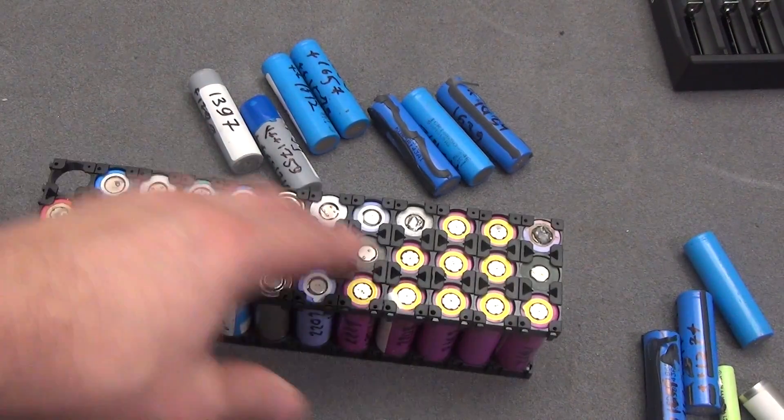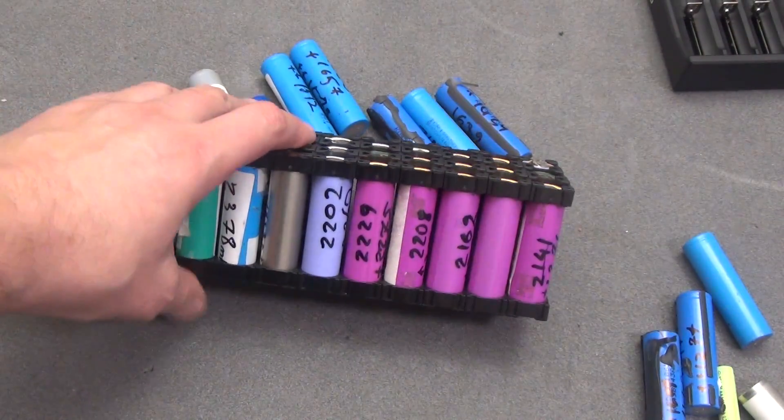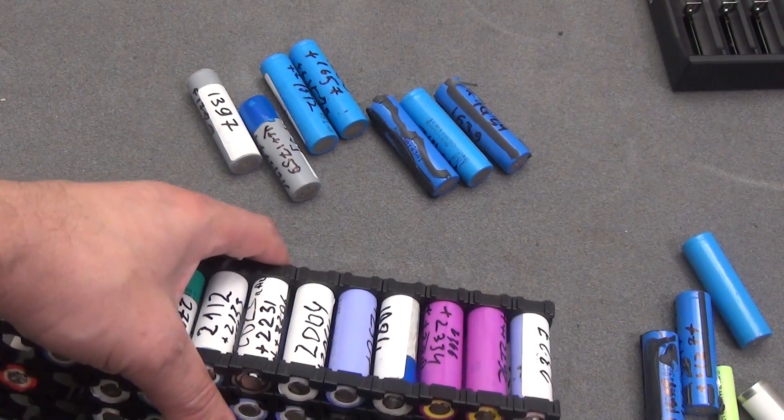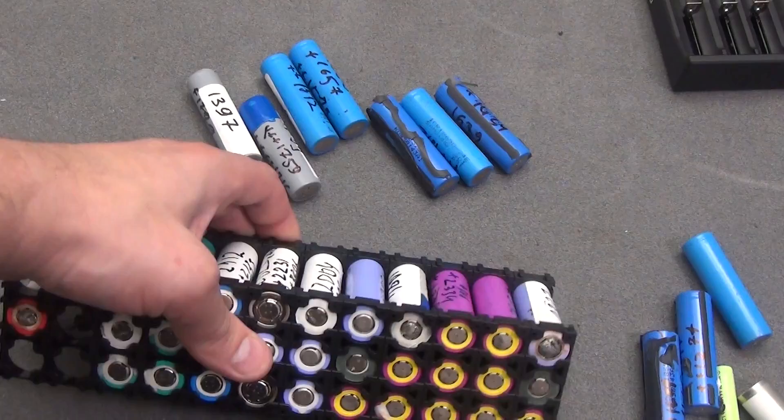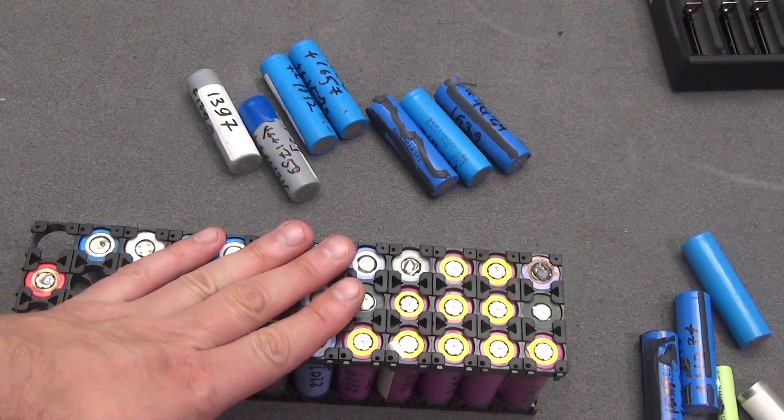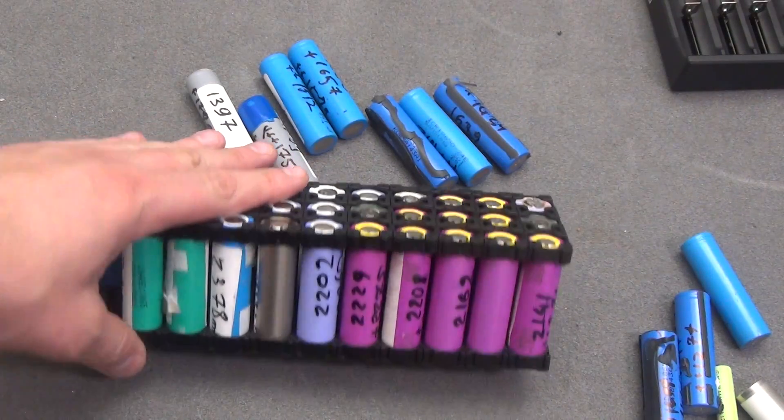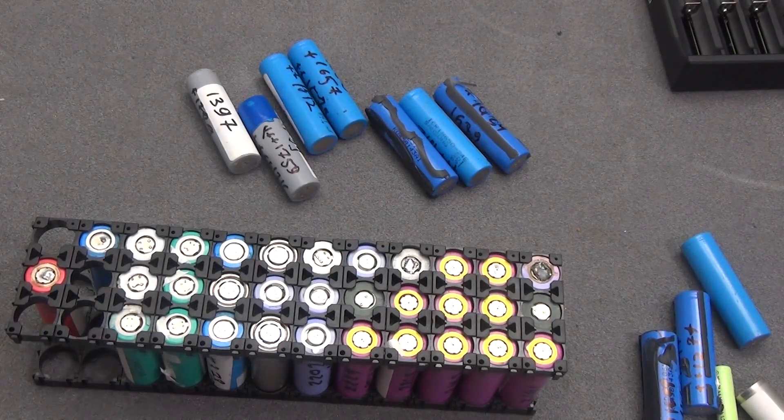Hello dear friends, what to do if you have accumulated quite a lot of 18,650 elements. They are plus or minus the same capacity, but somewhere I chose from 1700 to 2400 to fit into them. So I have accumulated a large number of them, and I decided to make something like an analog of EcoFlow.